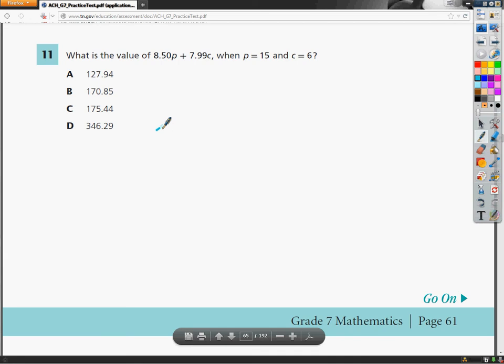Welcome. This is the 7th grade TCAP practice test for math. This is question number 11. The question says, what is the value of 8.50p plus 7.99c when p equals 15 and c equals 6?